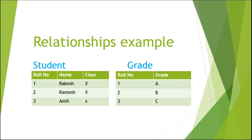Let's see a relationship example. We have two tables: student and grade. The rule number, name, and class are the fields of the student table, and the grade table has rule number and grade. The rule number exists in both tables, so the rule number is a common field in the student and grade table, meaning the student table and grade table are in a relationship.